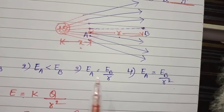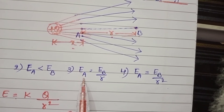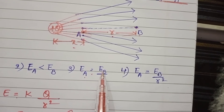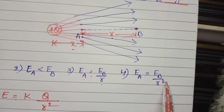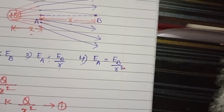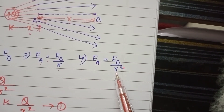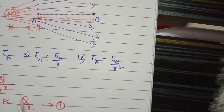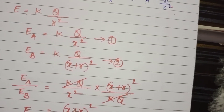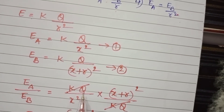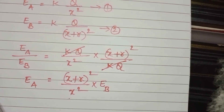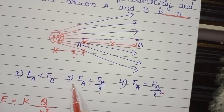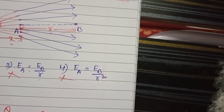Checking the given options: the third option states EA = EB/R and the fourth option states EA = EB/R². However, the electric field intensity not only depends upon the distance of separation between A and B, but also on the distance from the charge to point A. The expression is (X+R)²/X², so the third and fourth options are wrong.